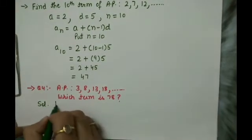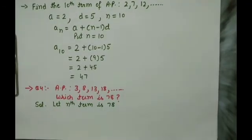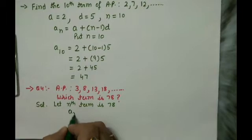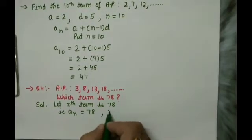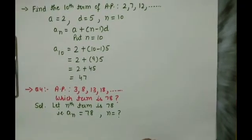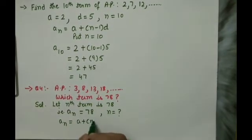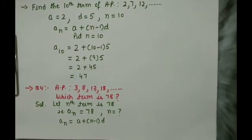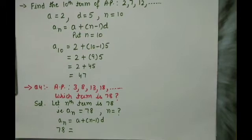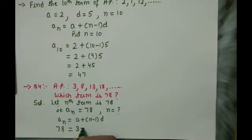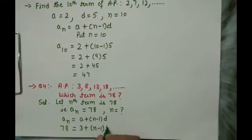Let the nth term be 78. That means we suppose a_n equals 78, and we need to find the value of n. Using the formula a_n equals a plus n minus 1 into d: the value of a_n is 78, the first term a is 3, and the common difference d is 8 minus 3, which equals 5.